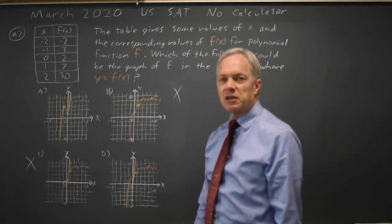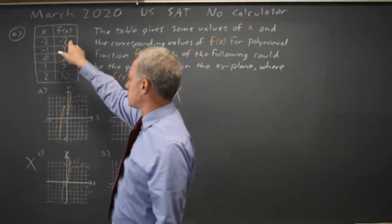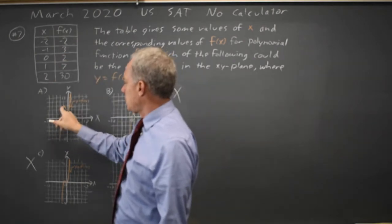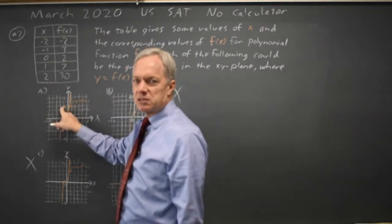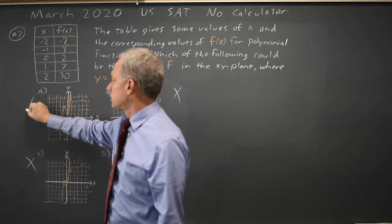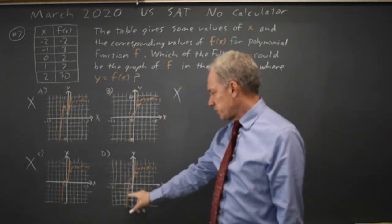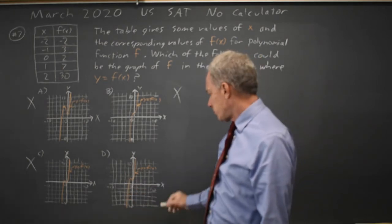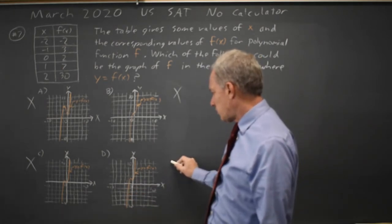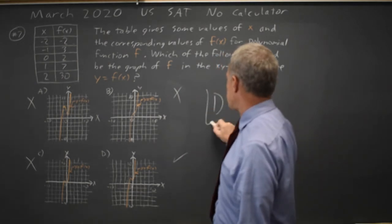And choice D looks very close to 3, so it's either A or D. Let's go to x equals negative 2, where f of x is also supposed to be negative 2. Choice A, f of negative 2, the y value when x is negative 2, is positive, not negative 2. Choice D, the y value at x equals negative 2, the first grid line to the left of the y-axis, looks reasonably close to a y value of negative 2, so choice D is the correct answer.